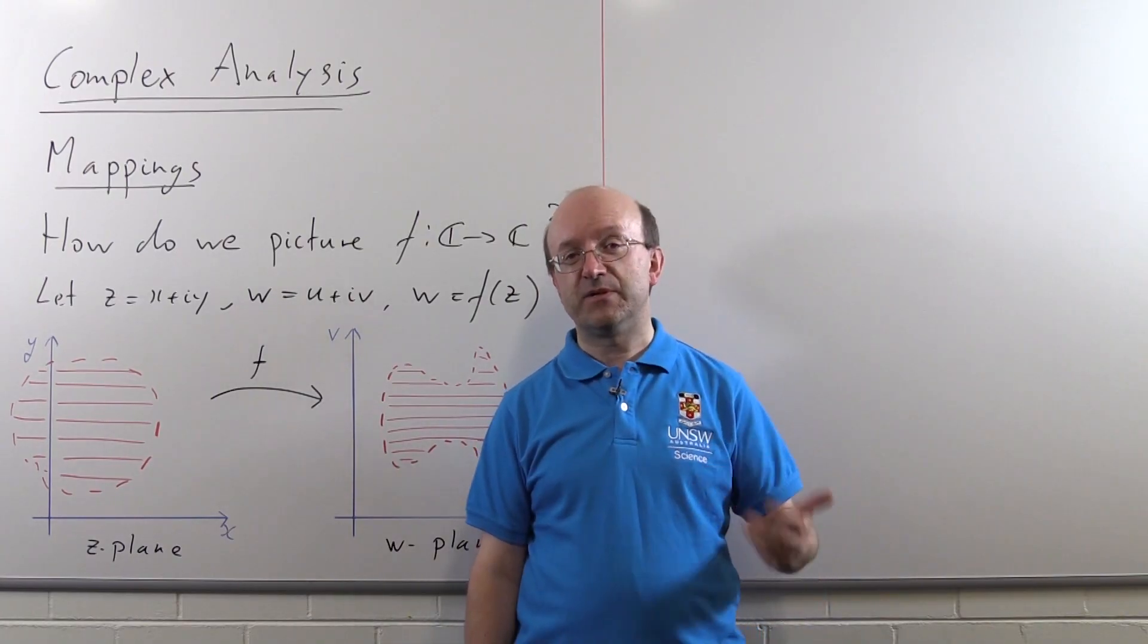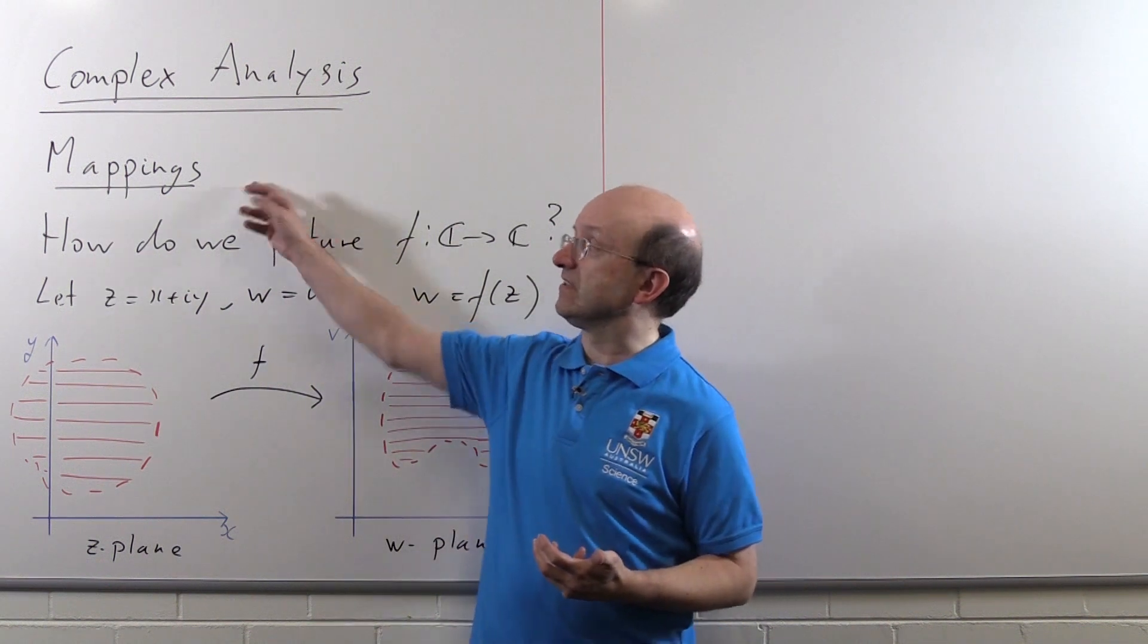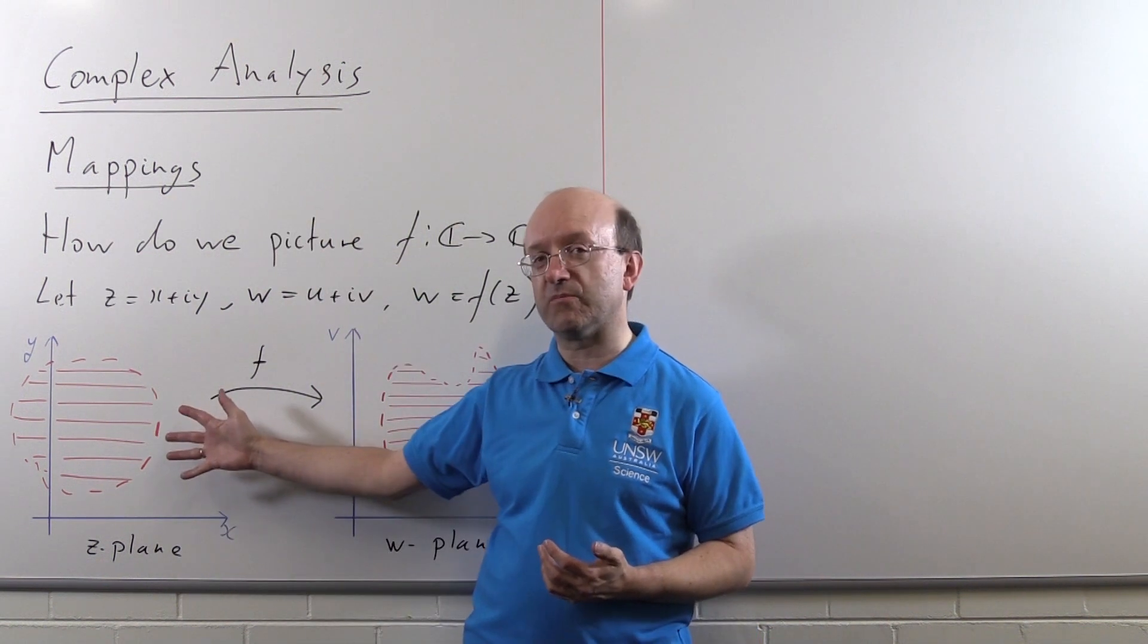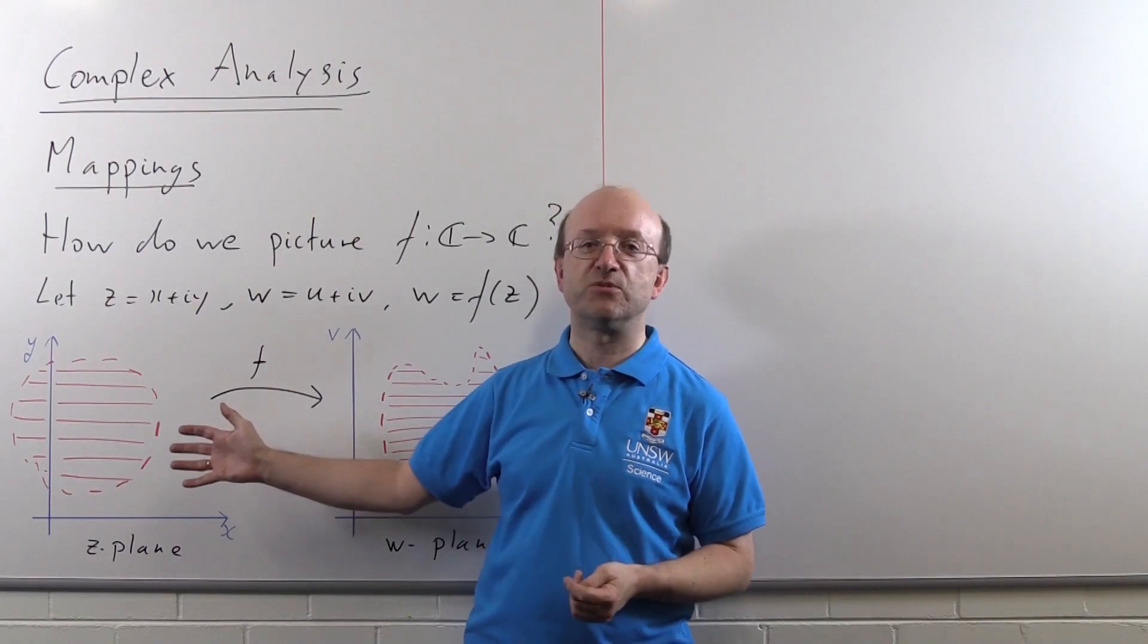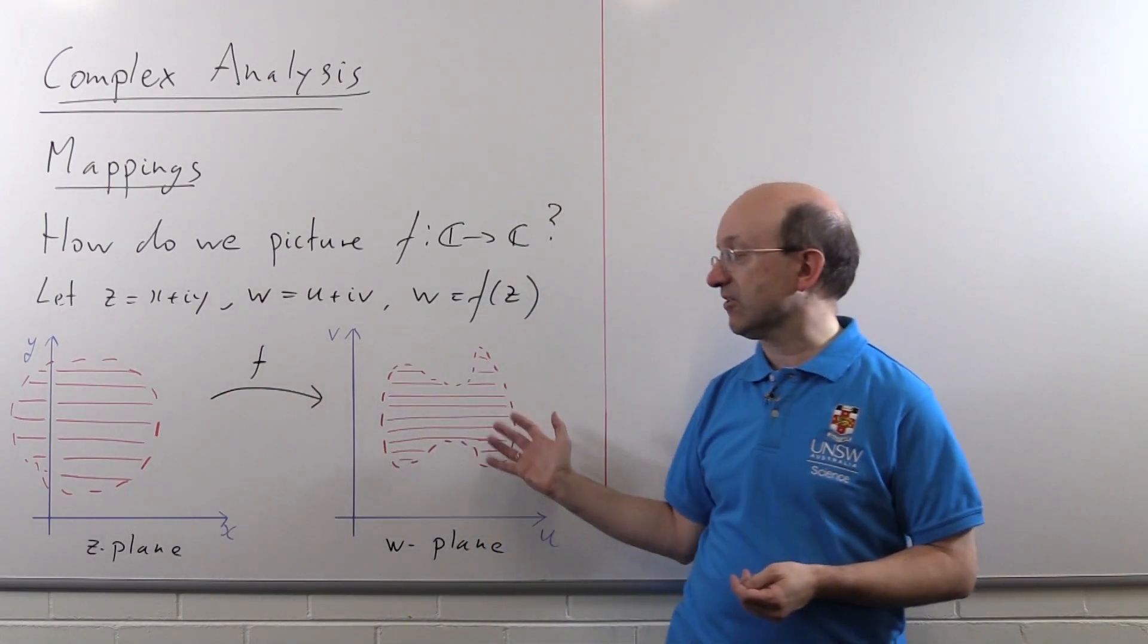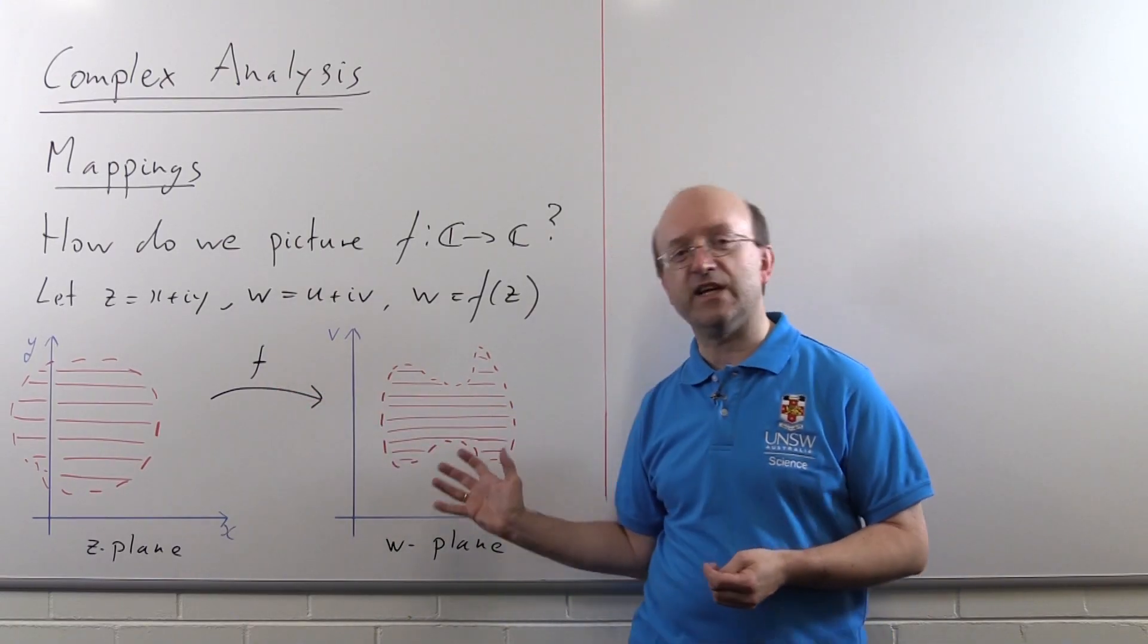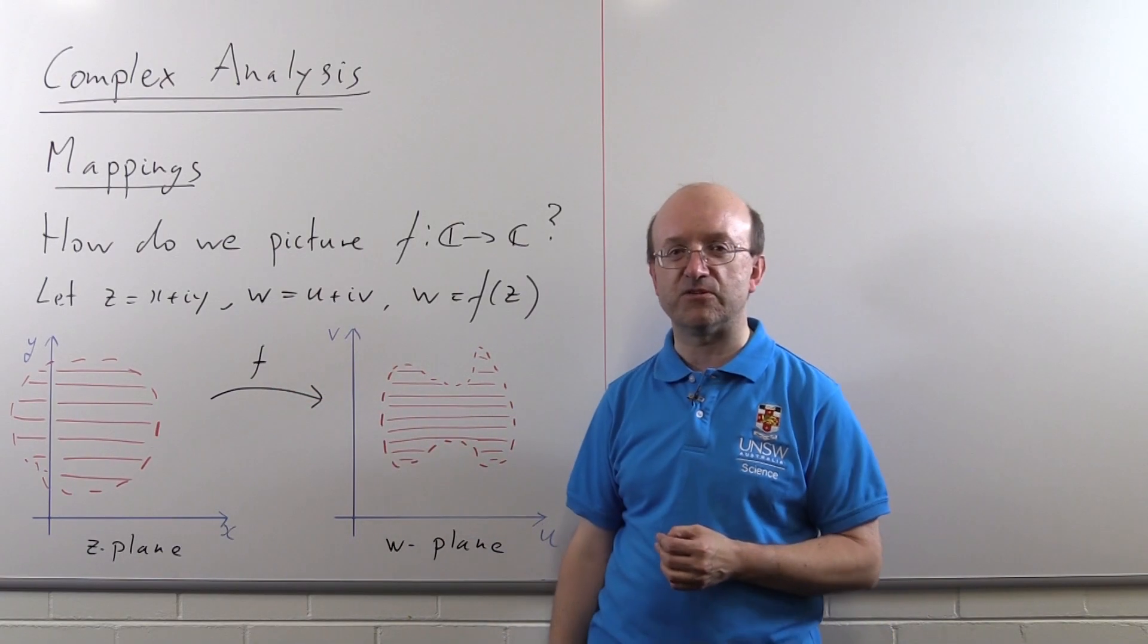So what we do is something a little bit more primitive which is why we often refer to these things as mappings. What we do is we take some region of the complex plane, we apply the function to every point in the region and we get another region in the complex plane and this change of shape gives us some idea of how the function behaves.